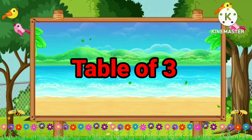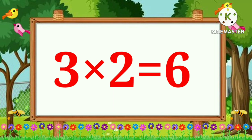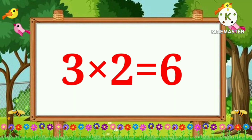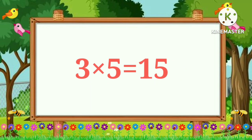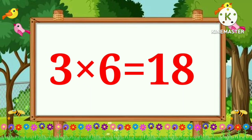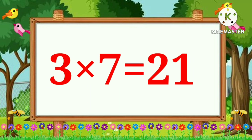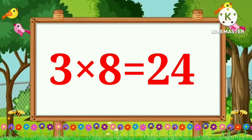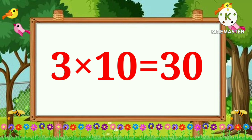Table of Three. Three ones are three. Three twos are six. Three threes are nine. Three fours are twelve. Three fives are fifteen. Three sixes are eighteen. Three sevens are twenty-one. Three eights are twenty-four. Three nines are twenty-seven. Three tens are thirty.